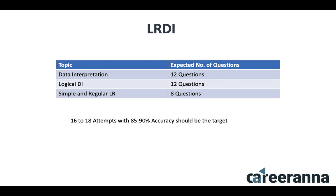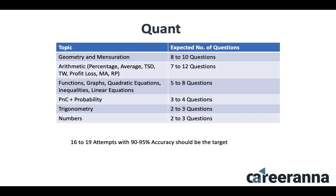The third part is simple, regular LR — things like arrangements, games, and tournaments — comprising 8 questions. Overall, 16 to 18 attempts with 85 to 90% accuracy should be your target for a good score in LRDI.